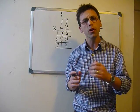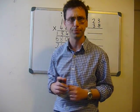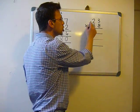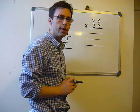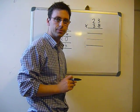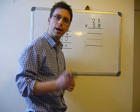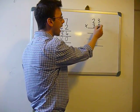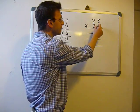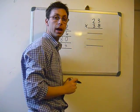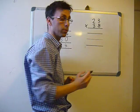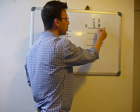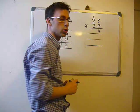Now if you thought that was hard, let's try another one. 23 times 38. Remember, we have to start with the same number, 8. 8 times 3 equals 24. You put the 4 down and carry the 2.